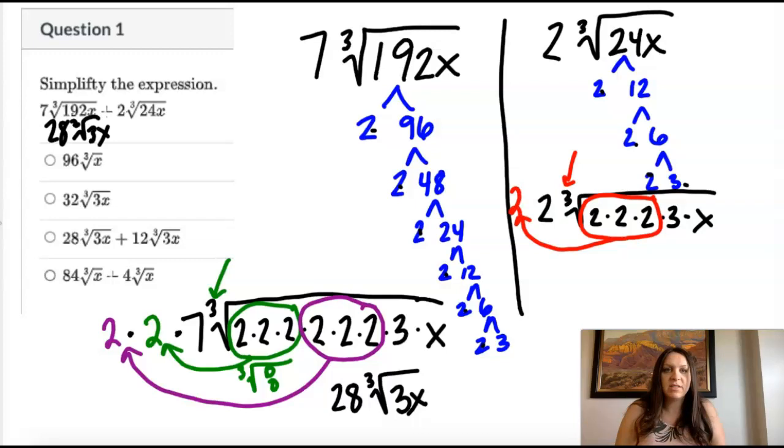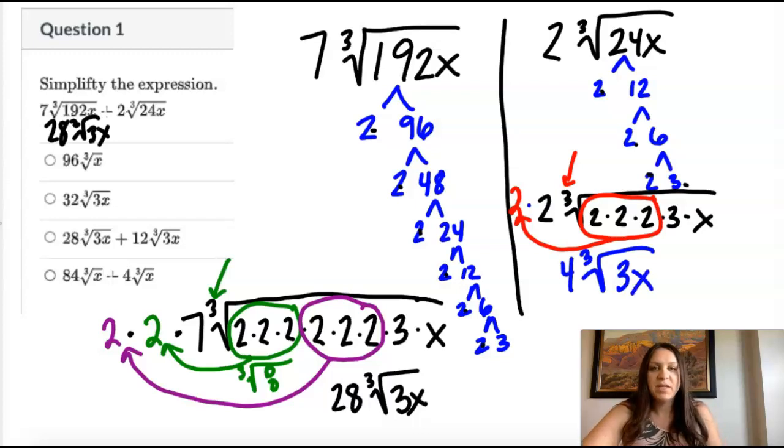So last step is to multiply these two times two is four. And then 3x is left inside the square root because there wasn't three of a kind. So that simplified to four cube root of 3x.